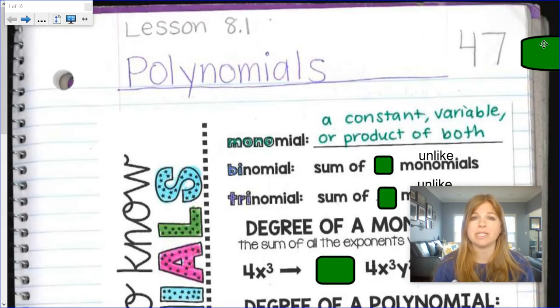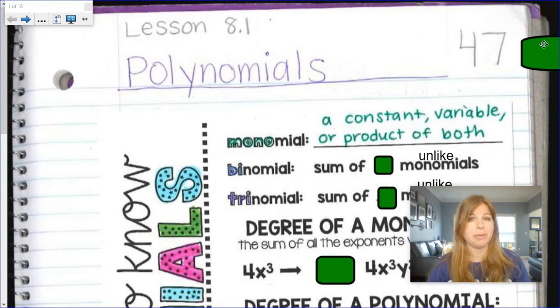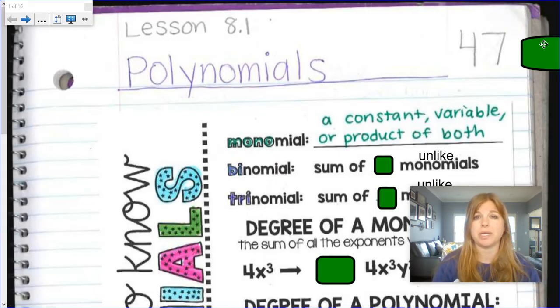Can't have any negative exponents, can't divide by a variable, can't divide by a number though. x over 2 is a monomial because it's really one half x, a number multiplied by a variable.